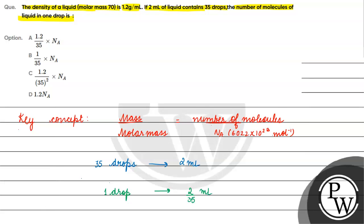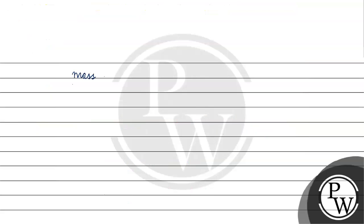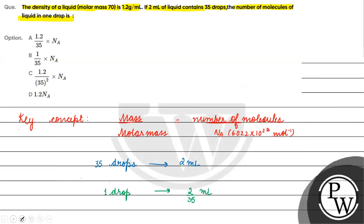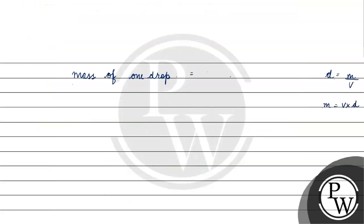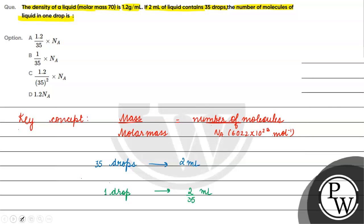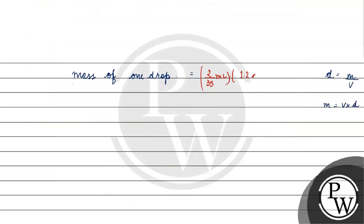Now, if we talk about the mass of one drop: density equals mass divided by volume, so mass equals volume × density. Volume of one drop is 2/35 ml, and density is 1.2 gram per milliliter. The milliliter units cancel out, giving mass of one drop = 2.4/35 grams.